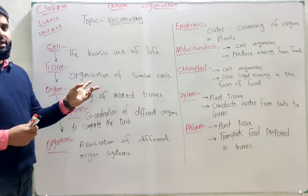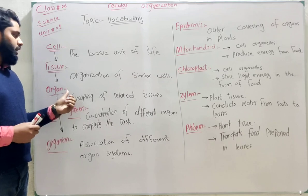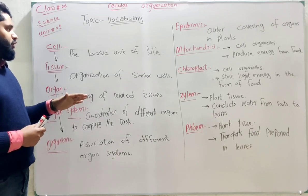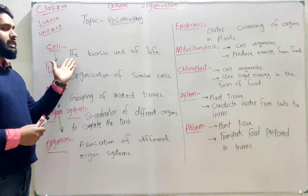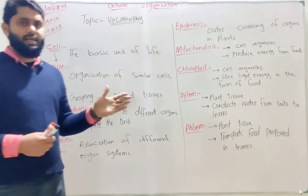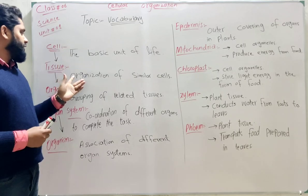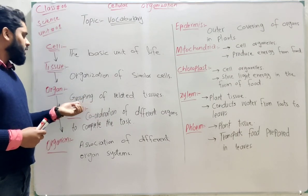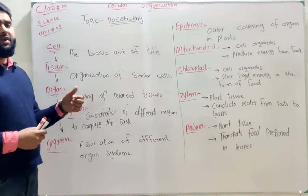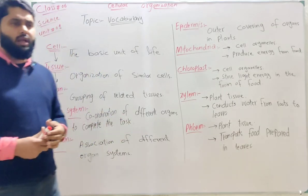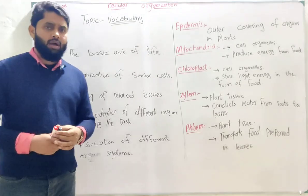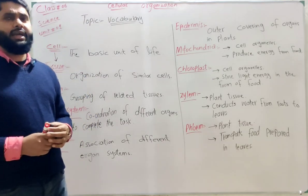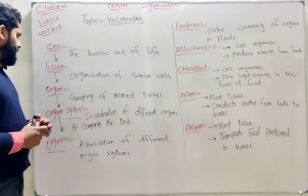The organization of similar cells is called tissue. The next definition is organ: the grouping of related tissues. Different tissues or similar tissues combine to form organs. We see different examples of cells like bone cells and muscle cells in animals. Tissues include bone tissue, muscle tissue, nervous tissue, and skeletal tissue. An organ is the grouping of related tissues; different tissues combine to form an organ.